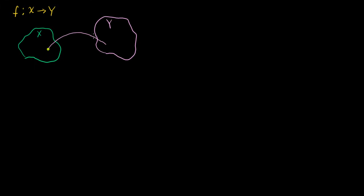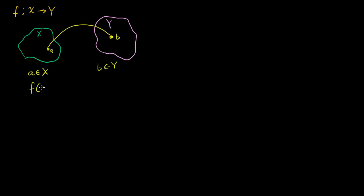This little member of X is associated with this member of Y. Let's say we call this a, and that b. We would say that, where a is a member of X and b is a member of Y, f of a is equal to b. This is all a review of everything we've learned already about functions.